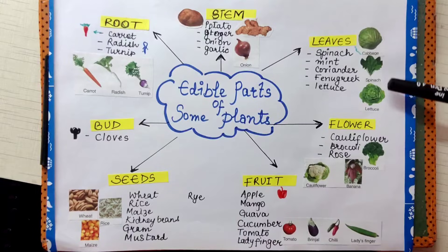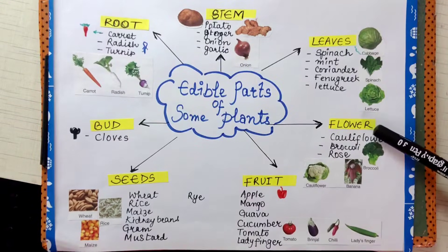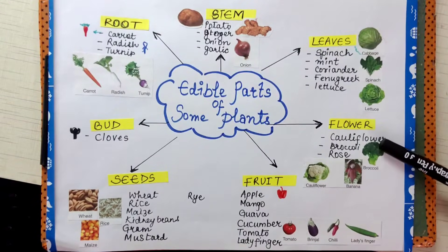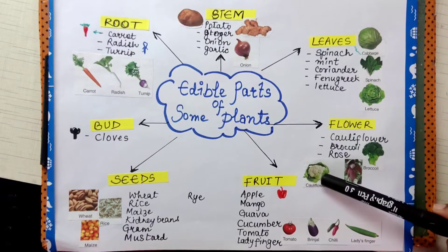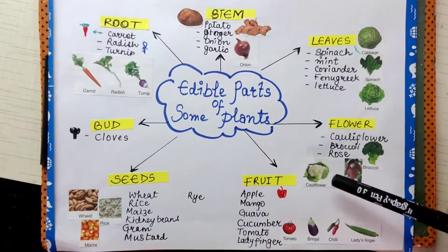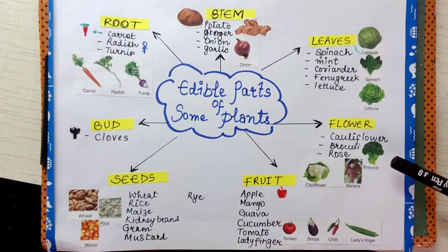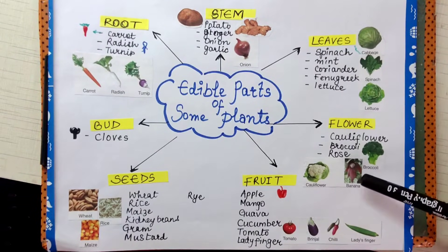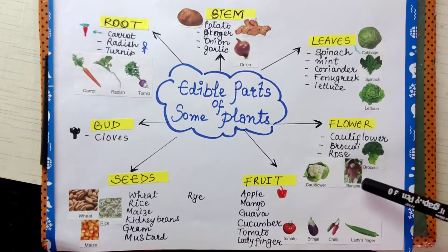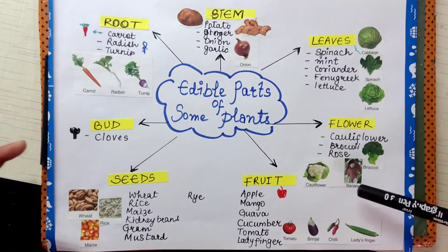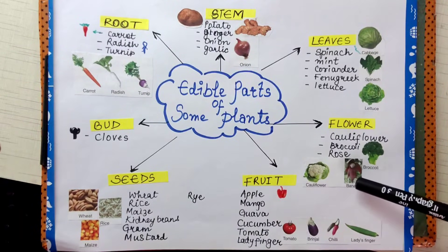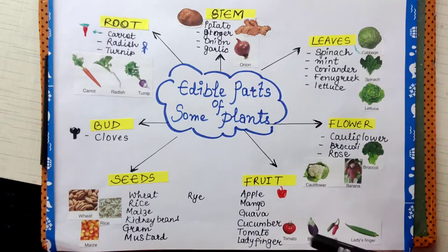I have taken pictures also. Some flowers are edible, like cauliflower — phulgobi — and broccoli. Some banana clusters of flowers are also taken as food in some parts of India.